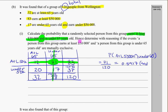They were actually asking us to determine with reasoning, so we have to give a reason for it, if the events 'a person from this group earns at least $50,000' and 'a person from this group is under 65' are mutually exclusive.